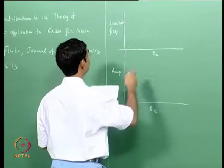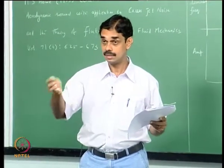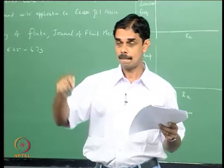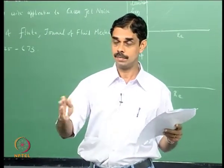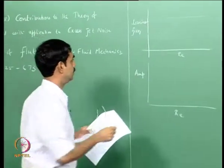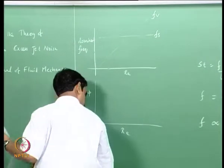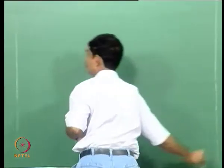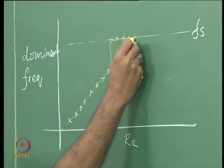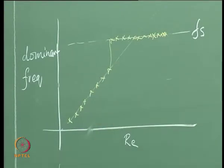Let us look at the case of a structure — for example, a cylinder that sheds vortices but is mounted on a spring, so the spring-mass system also oscillates. A similar situation occurs in underwater cables where the cable itself can vibrate. So if f_v is the vortex shedding frequency going up with Reynolds number and f_s is the structural frequency which is constant, as you increase Reynolds number the vortex frequency keeps climbing, then suddenly it locks to the structural frequency and both the structure and the vortex are shed at the same frequency.